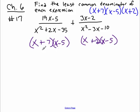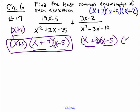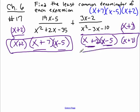So we have an x plus 7, an x minus 5, and an x plus 2, an x minus 5. So we need an x plus 2 over here. If we multiply this side by x plus 2 over x plus 2, and this side by x plus 7 over x plus 7 — in the form of 1 — that would give us the same common denominator. The common denominator is x plus 2 times x plus 7 times x minus 5, which is what they told us in the back of the book.